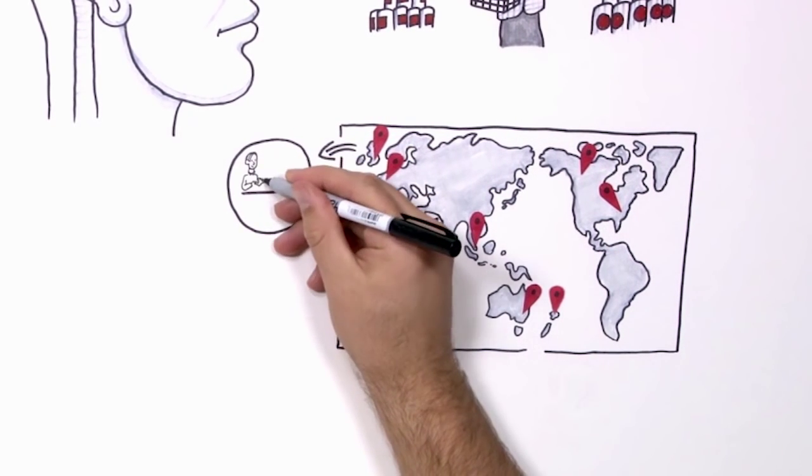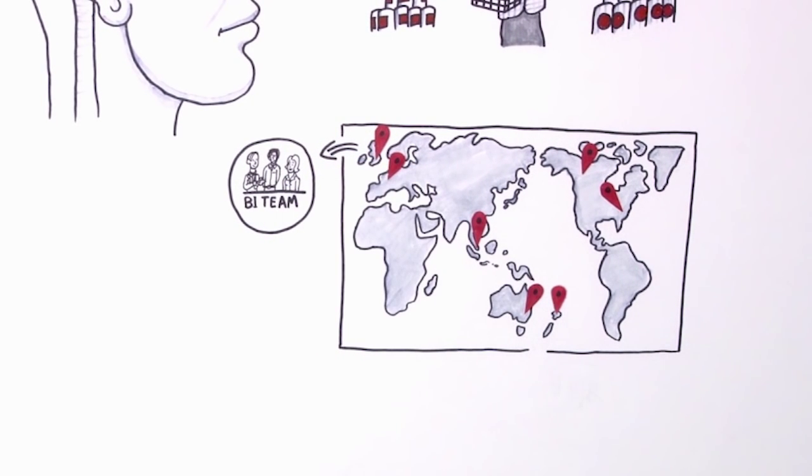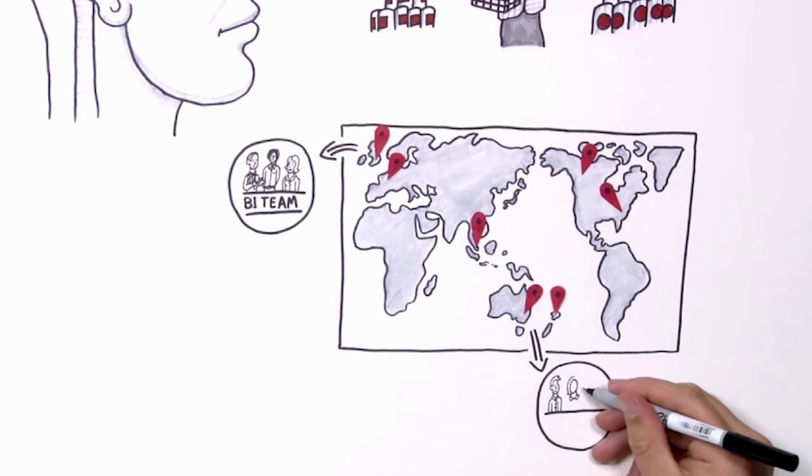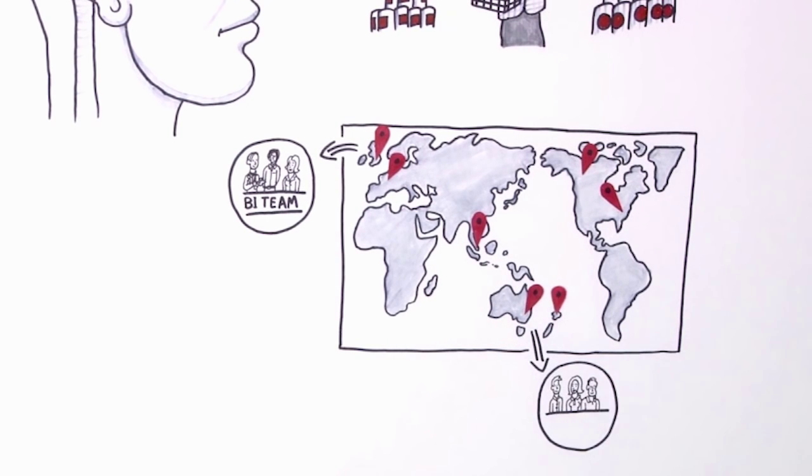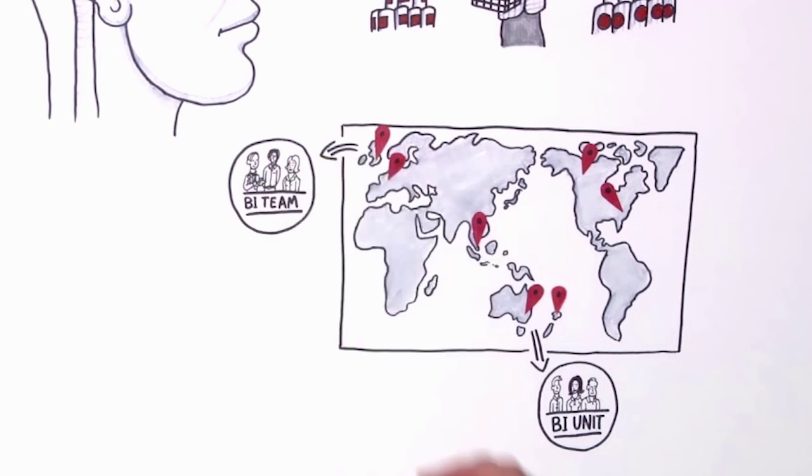The UK government established a dedicated behavioral insights team, often referred to as the Nudge Unit, in 2010. In 2012, the New South Wales government established a partnership with the UK BIT and became the first government in Australia to create a centrally staffed and funded BI unit.